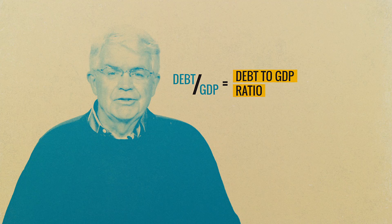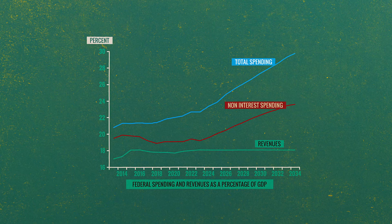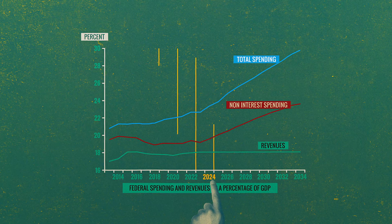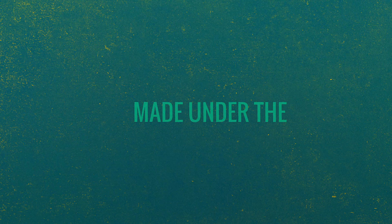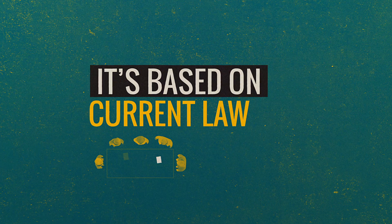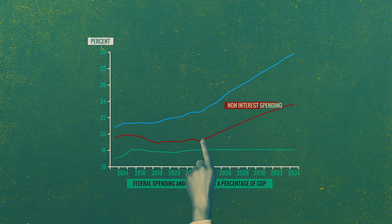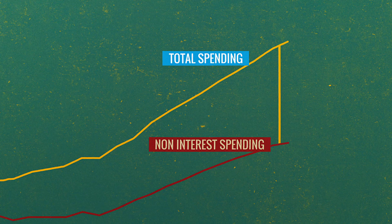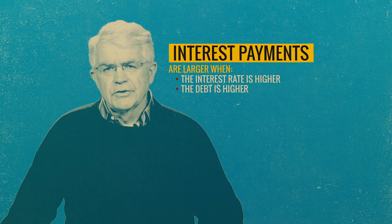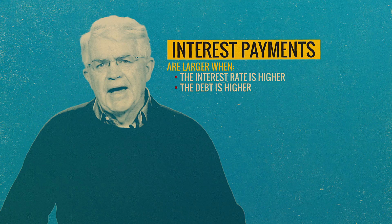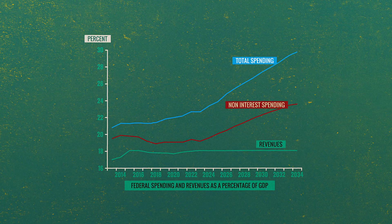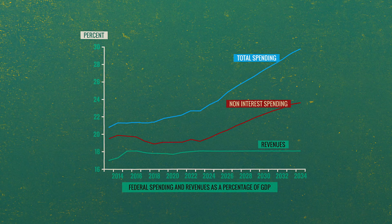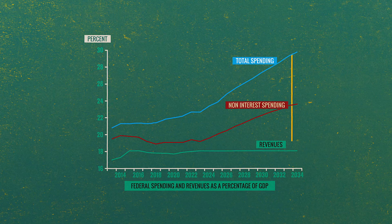Let's look at the numbers — federal spending and revenues as a percentage of GDP projected into the future by the Congressional Budget Office, under the assumption that current law doesn't change. The red line shows spending excluding interest payments. The blue line includes interest payments, so the gap between the two is the amount spent on interest. Interest payments grow as debt and interest rates rise. Revenues are basically flat as a share of GDP under current law.